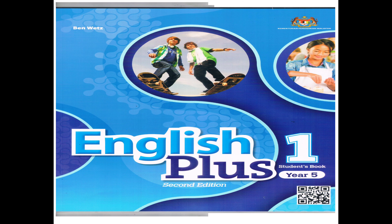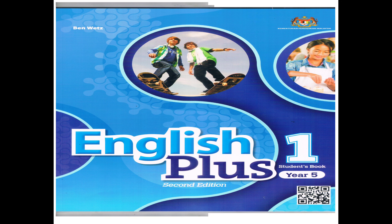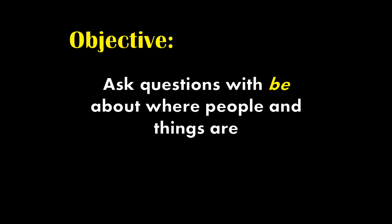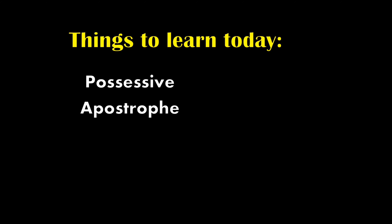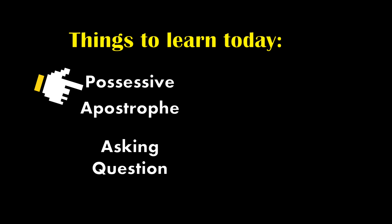So today we're going to talk about starter unit lesson 4. If you have downloaded the digital book, it should be on page 7. So let's talk about today's objective. At the end of this lesson, you'll be able to ask questions with the verb be about where people and things are. There are two things we are going to learn today: the first one is possessive apostrophe and the second one is asking questions.